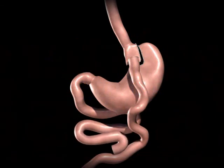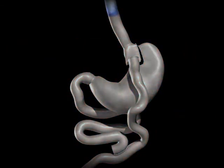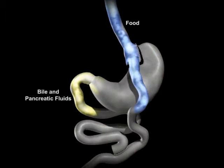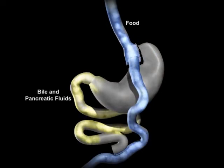The upper portion of the small intestine is reconnected to the lower portion of the intestine. The bile and pancreatic fluids from the liver and pancreas allow food to be completely digested. As with all weight loss procedures, behavior modification and dietary compliance plays a critical part in determining the long-term success of the procedure.